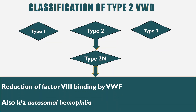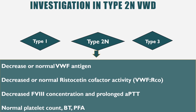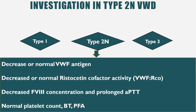In type 2n, there is reduction of factor VIII binding by vWF, so the patient presents like a haemophilia patient — this is also known as autosomal haemophilia. On investigation, vWF antigen level is decreased or normal, ristocetin cofactor activity is decreased or normal because platelet binding function remains intact, but factor VIII concentration is decreased and APTT is prolonged. Platelet count, bleeding time, and platelet function analyzer results are normal.